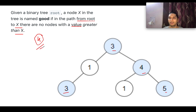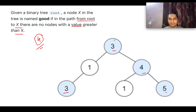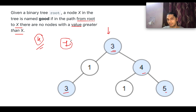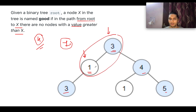To identify whether a node is a good node, we look at the path from the root up to that node and check whether there is any node with a greater value than the node currently under consideration. If there is no such node, it is a good node. Starting from the root, since root is always a good node, the count updates to one. Moving left to node one, the path has root three and node one — three is greater than one, so this is not a good node.